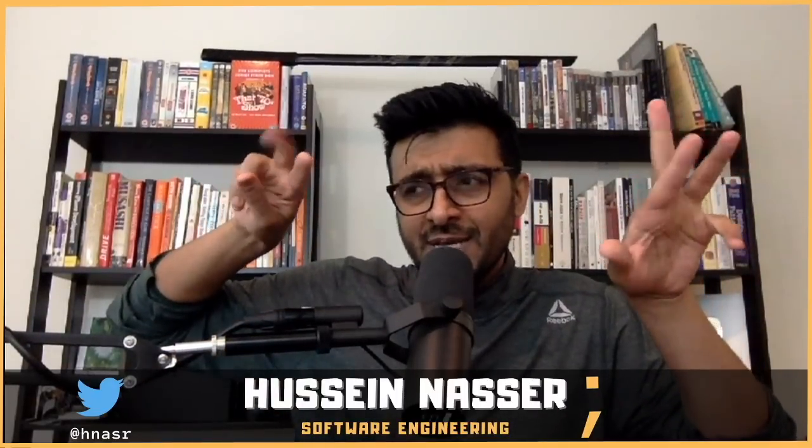For advanced users who really know what they're doing: you can use database hinting — include special comments in your queries, like the one shown on screen, to force the database to use a specific index. You're essentially telling the database: your stats are out of date, trust me, use the f1 index or f2 index. This is useful when your application has context the database doesn't have yet — your stats aren't caught up to what you just did.